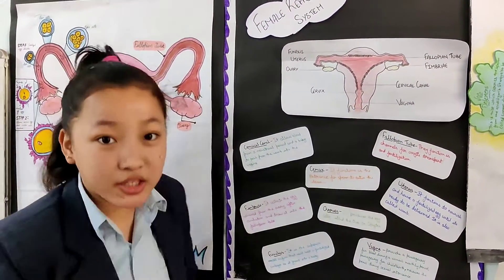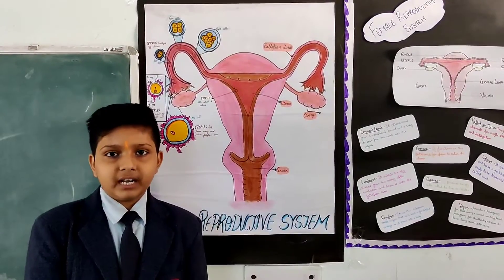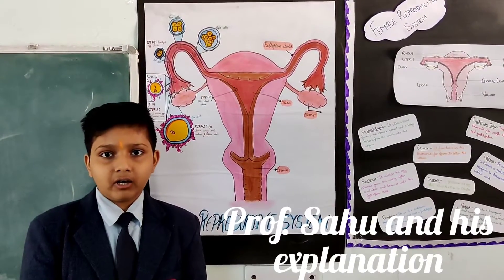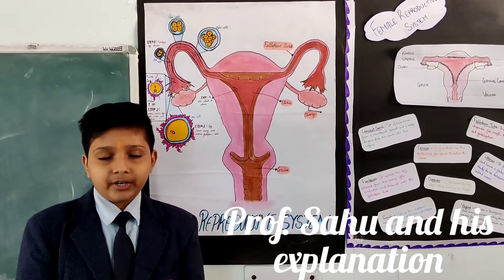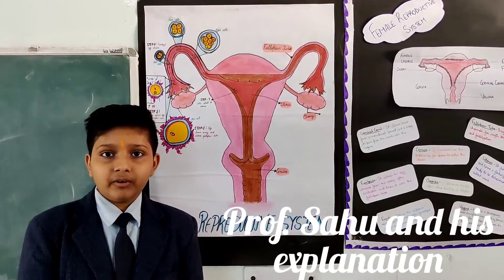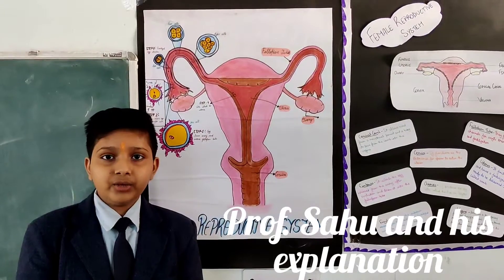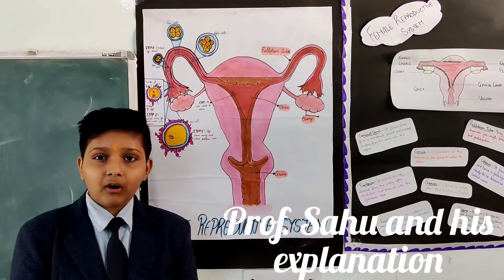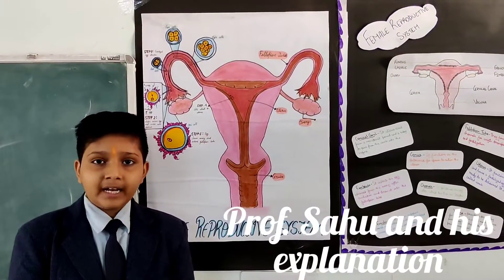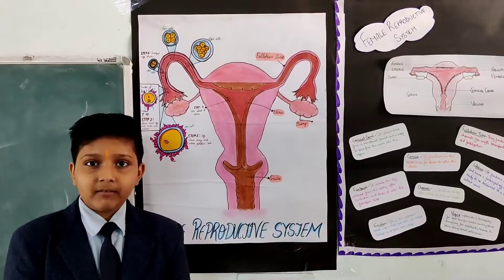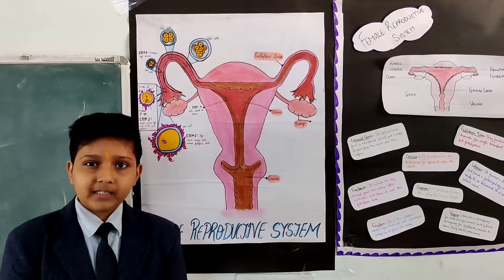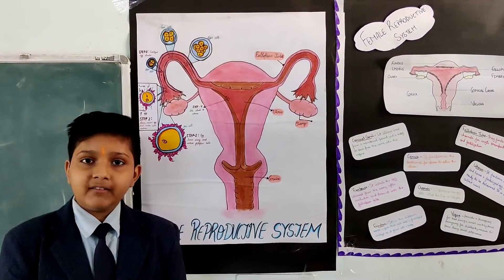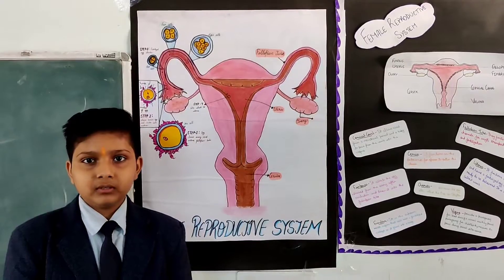The fertilized egg, now called the zygote, continues down the oviduct into the uterus. It changes into a ball of cells and implants itself into the uterus wall, where it develops into a human embryo.